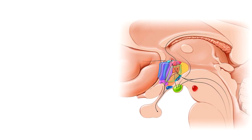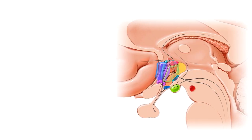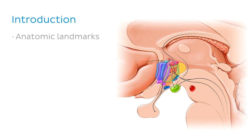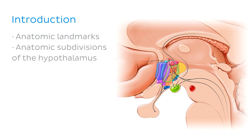So let's get started with this tutorial. We're going to begin with an introduction to some of the basic principles helpful to know when studying the hypothalamus. As part of this introduction, we're going to explore the anatomic landmarks surrounding the hypothalamus, and we'll also introduce you to the anatomic subdivisions of the hypothalamus — an approach of breaking down the hypothalamus into distinct compartments.